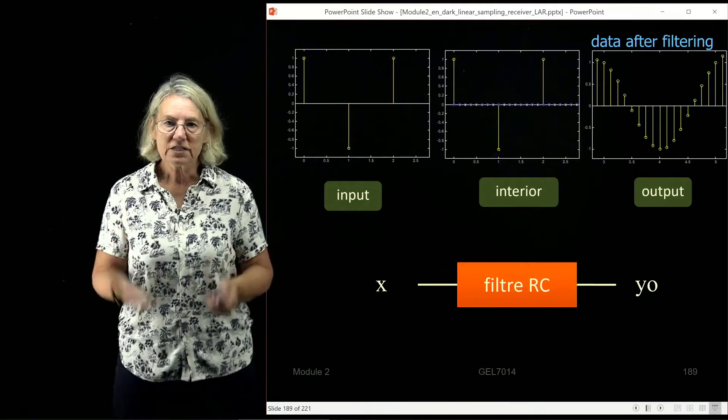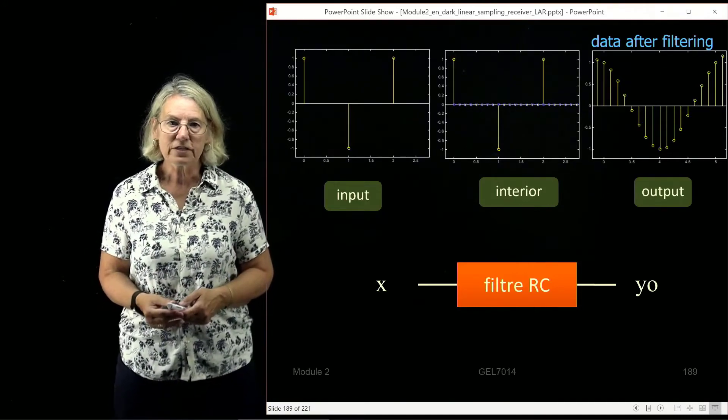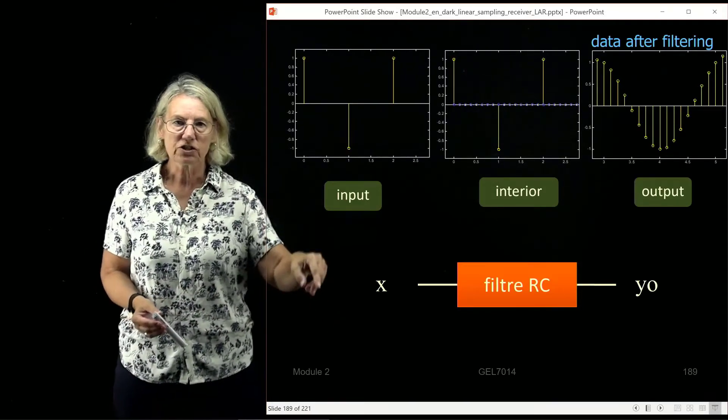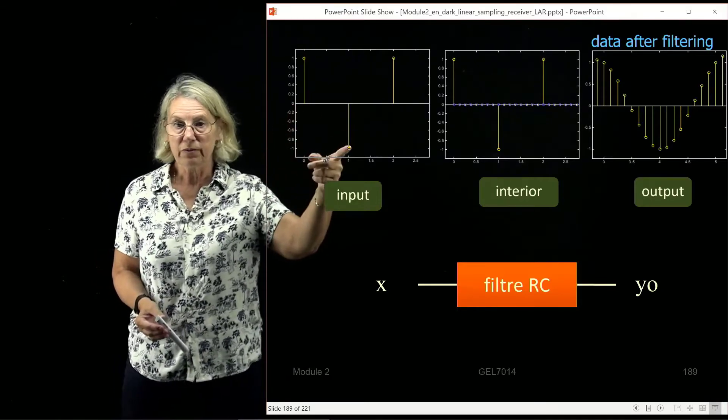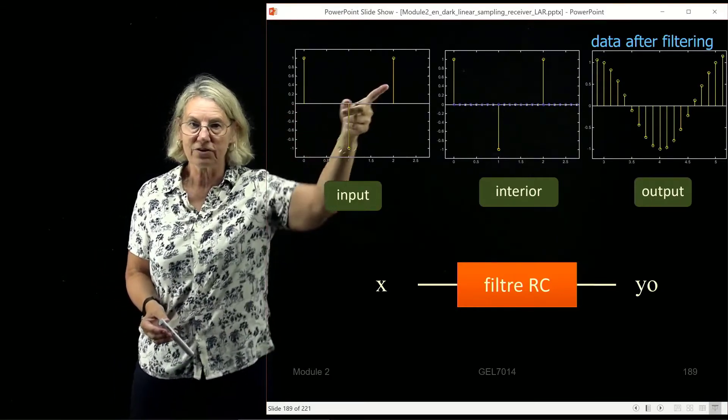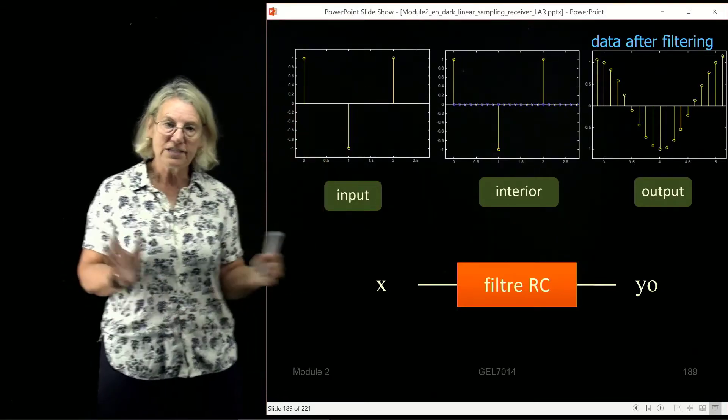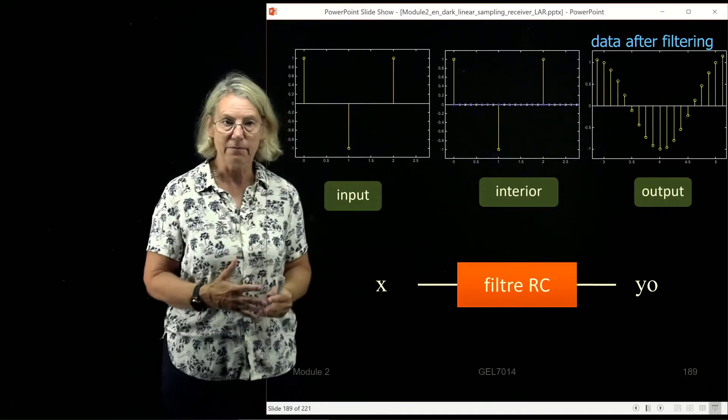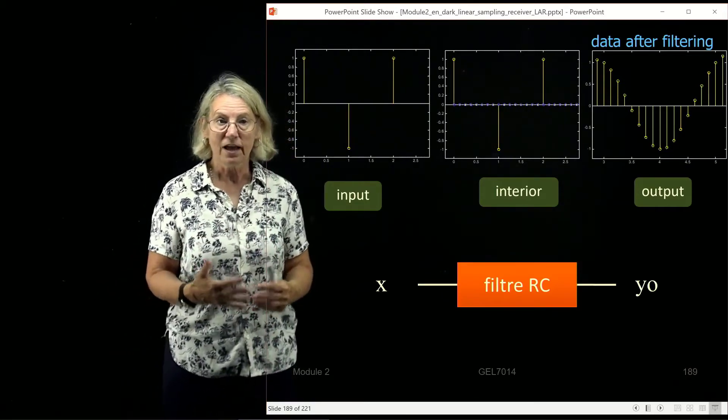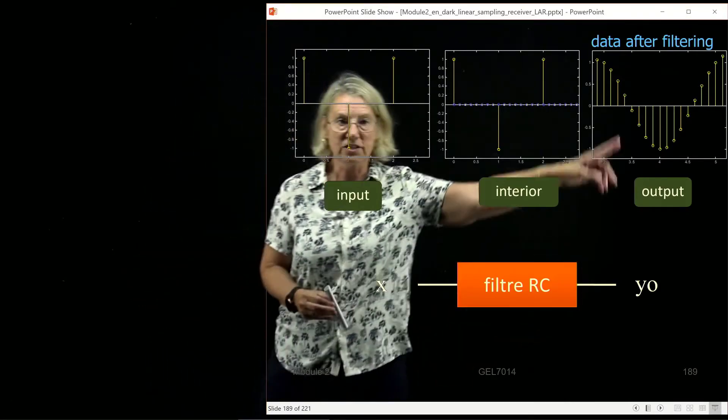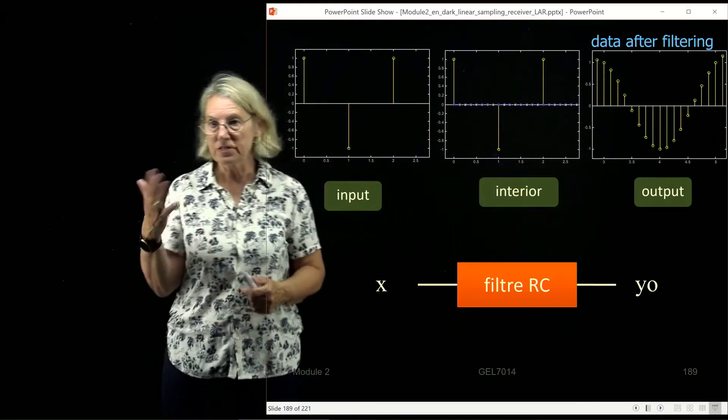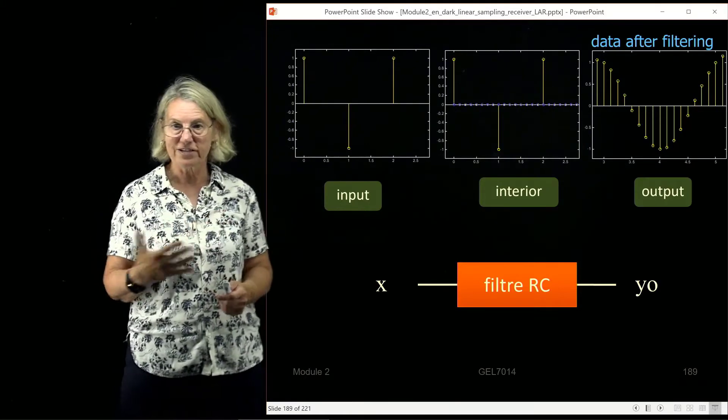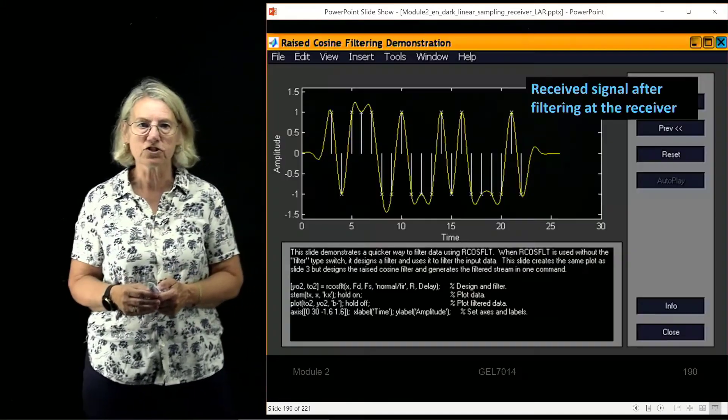So if we looked at the input to our filter, like here we have a logical one, logical zero, logical one, and interior to the filter, it starts like that, but then it is oversampled, and what comes out of the filter is actually the oversampled rate. So don't be surprised that the size of your vectors changes when you go through the filter.